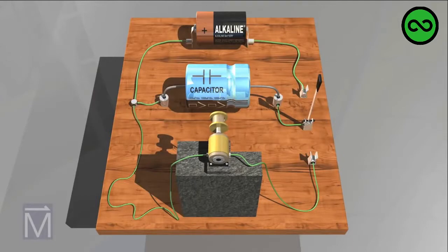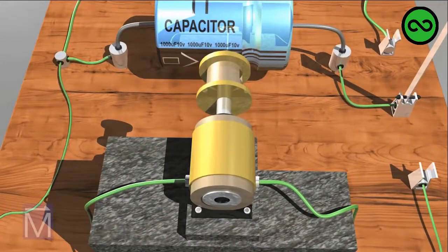Capacitors can be useful for storing and quickly discharging electricity. So you can power, for example, an electric motor as we'll show here.